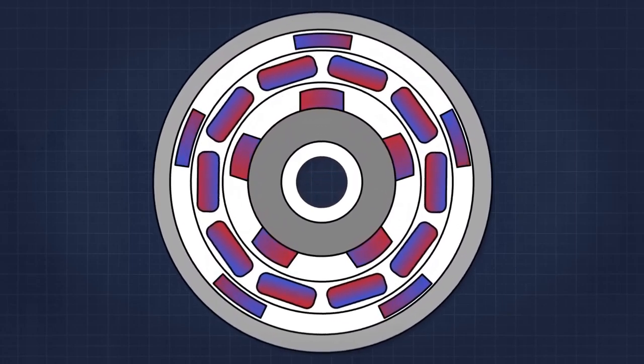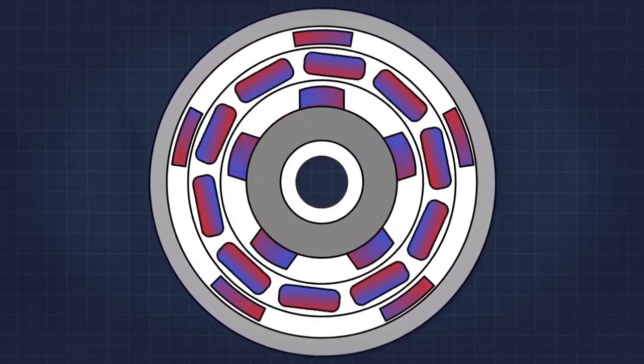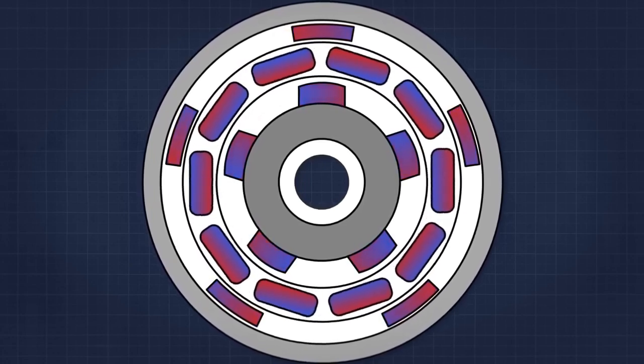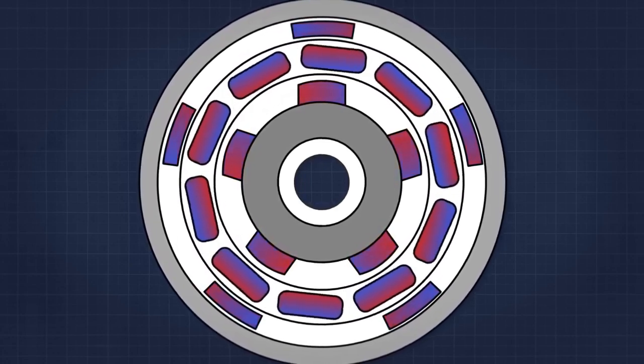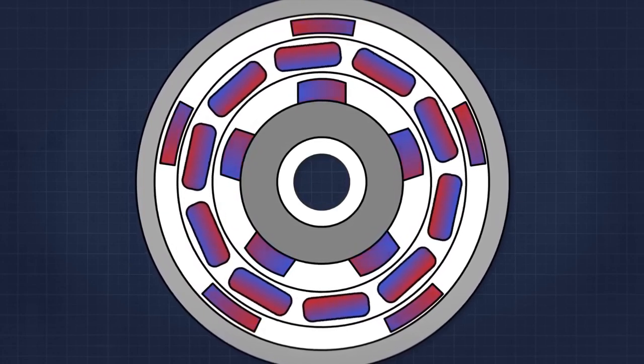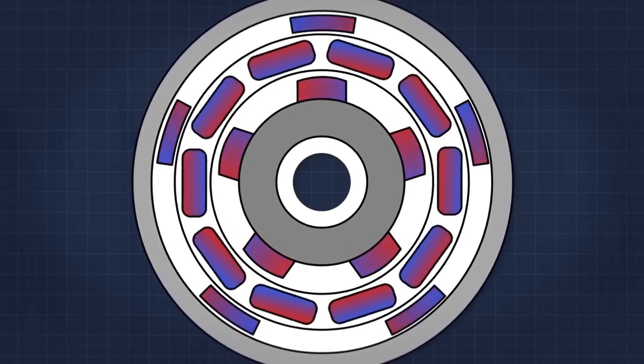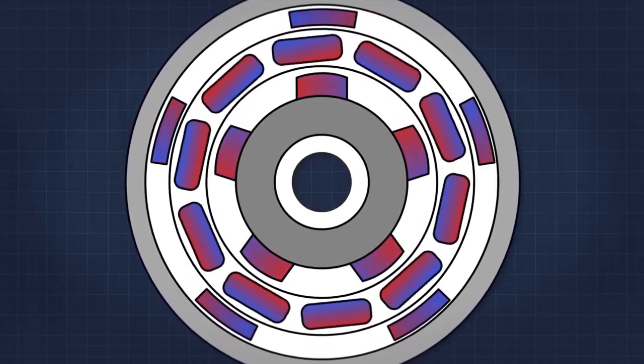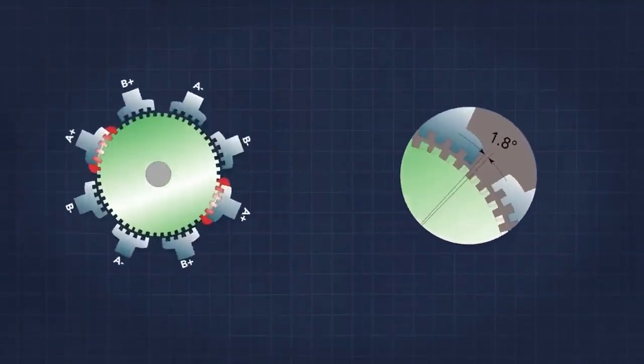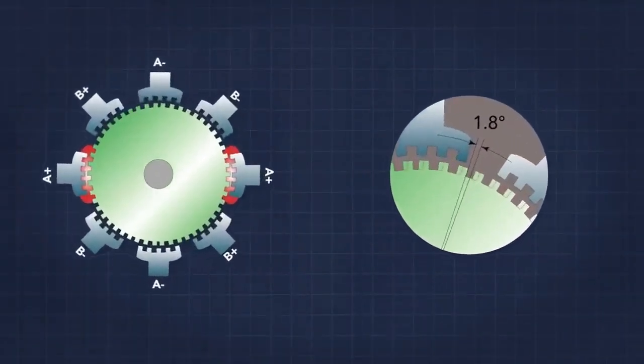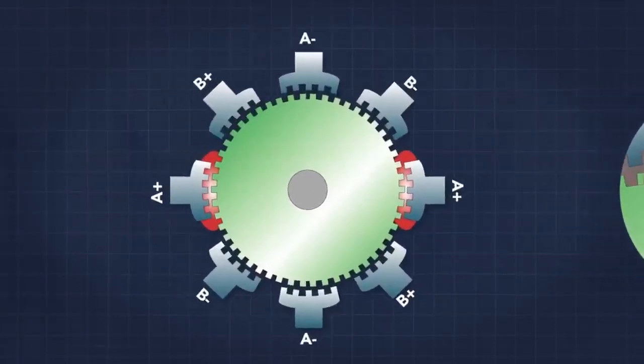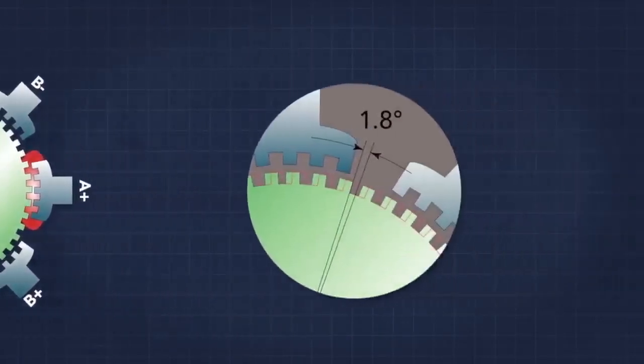Steppers are typically classified by the number of allowable steps they can be commanded to move. For instance, a 1.8-degree step motor is capable of 200 steps per revolution, as 1.8 times 200 equals 360 degrees or one full revolution. Of course, that's in full-step mode. If operated in half-step mode, each increment becomes 0.9 degrees and the motor can then turn 400 steps per revolution.